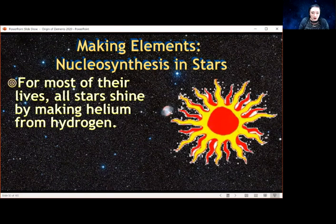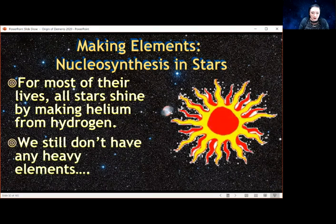For most of their lives, stars are really just shining by making helium from hydrogen. That's all they're doing, taking hydrogen, the most common thing out there, and sticking them together to make helium. That means we still don't have any heavy elements. We made some helium in the Big Bang, some helium inside stars, but we haven't made anything else yet. Where does it come from? That will be the topic of some future videos.